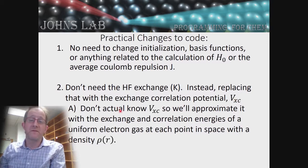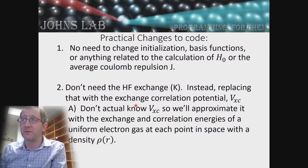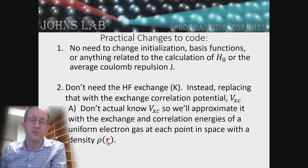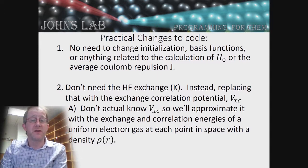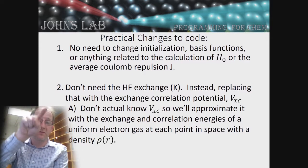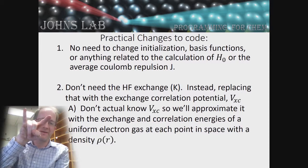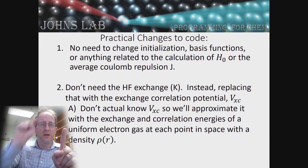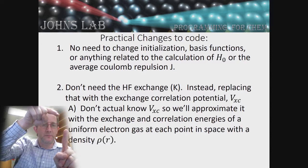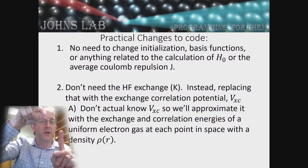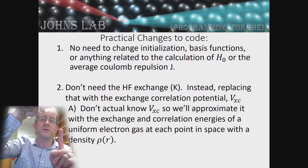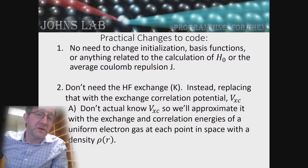We don't actually know what Vxc should be for a real system, so we're going to make the simplest approximation possible: we approximate it with the exchange and correlation energies of the uniform electron gas at each point in space with density rho(R). Imagine looking at the H2 molecule — the density won't be uniform throughout, but at each point we approximate the exchange-correlation energy density as that of a uniform electron gas with that same local density rho, assigning a different value at each point. So the exchange-correlation potential becomes a functional of the local density.